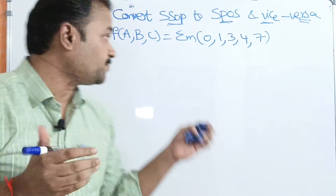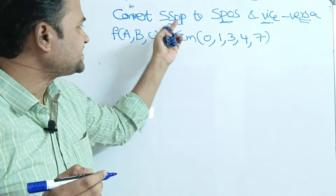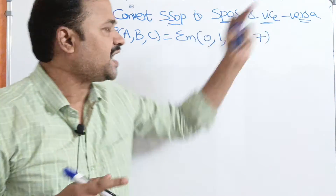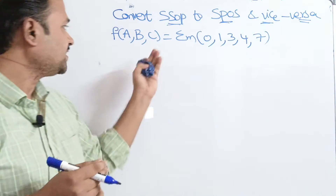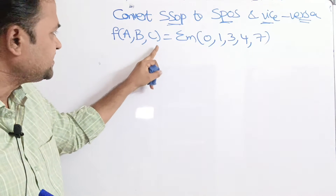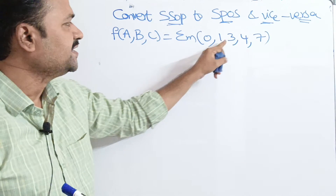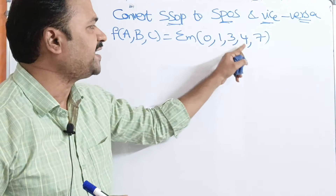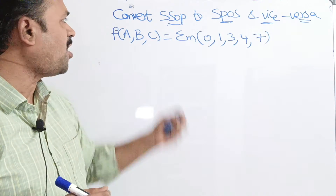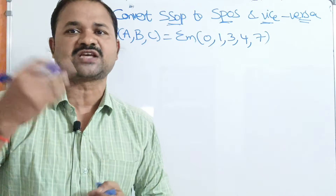Now, let's see this example: Convert SSOP to SPOS and vice versa. This is the function which is given: F of ABC equal to sigma M of 0, 1, 3, 4, 7. So this is in the form of SSOP — Standard Sum of Products.